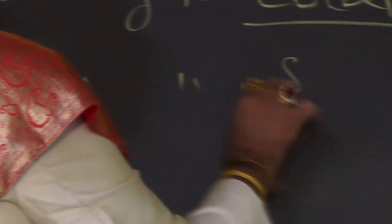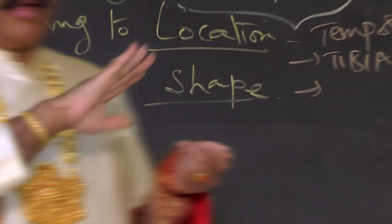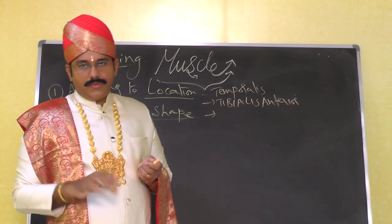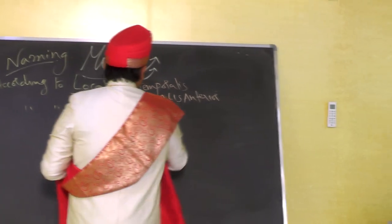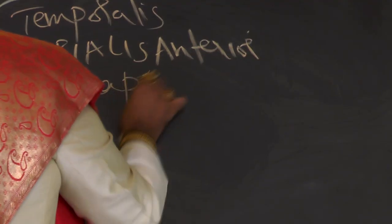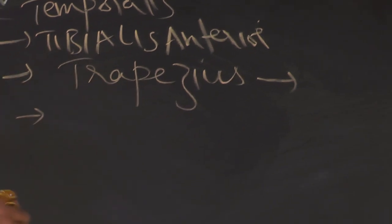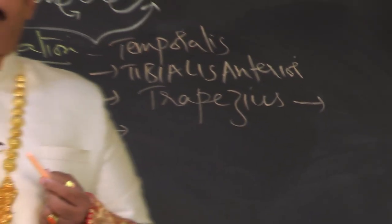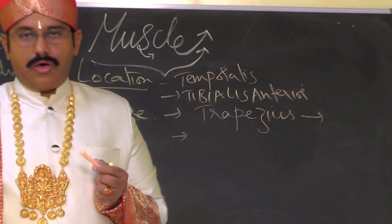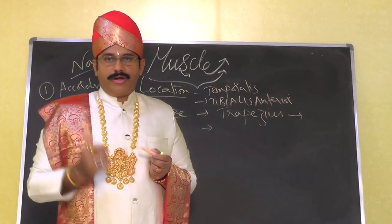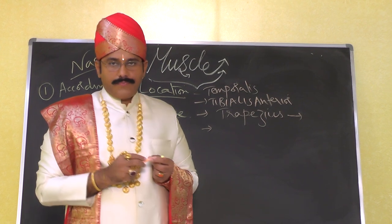According to shape: when both halves of a muscle together form a trapezoid shape, it is called the trapezius. Muscles that are rhomboid in shape are called rhomboidus — which includes rhomboidus major and rhomboidus minor.